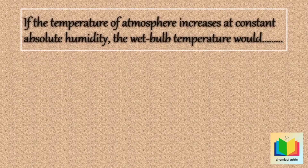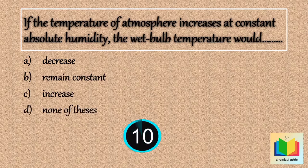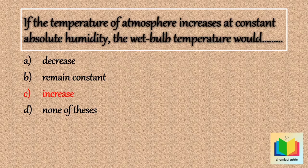Next question: if the temperature of the atmosphere increases at constant absolute humidity, the wet bulb temperature would — option A: decrease, option B: remain constant, option C: increase, option D: none of these. The answer is option C: increase.